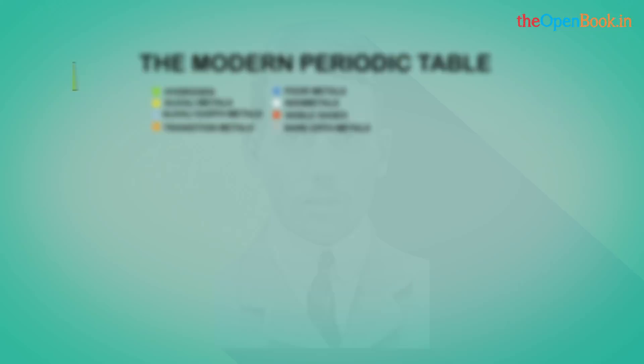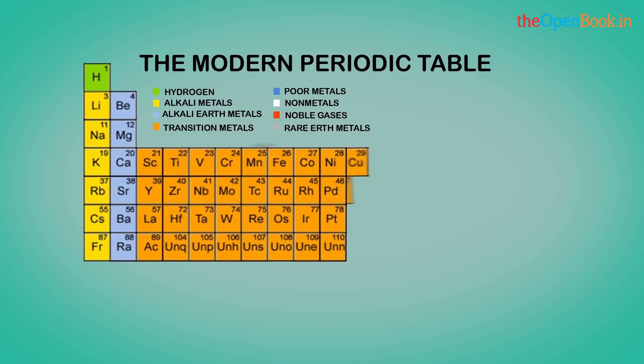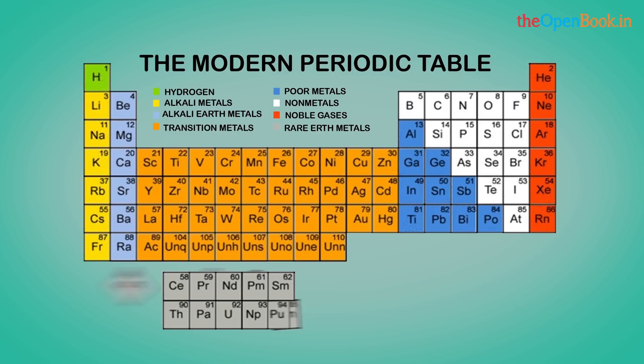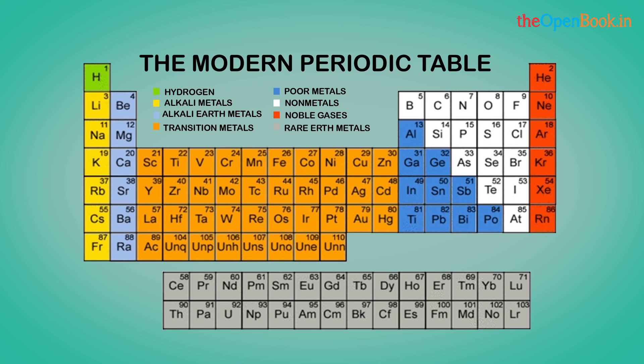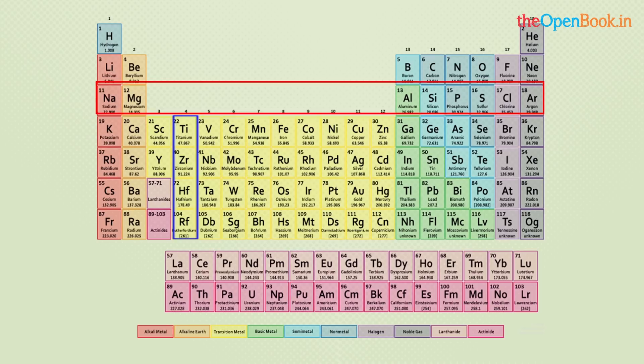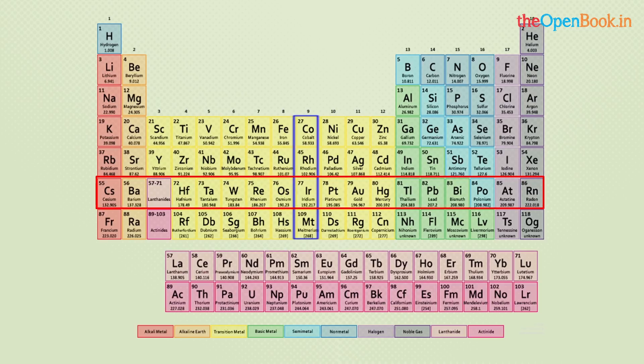Moseley (1912): Moseley arranged elements in increasing order of atomic numbers in a modified table called the modern periodic table. He stated that properties of elements were periodic functions of their atomic numbers. This method removes most of the defects of Mendeleev's periodic table.